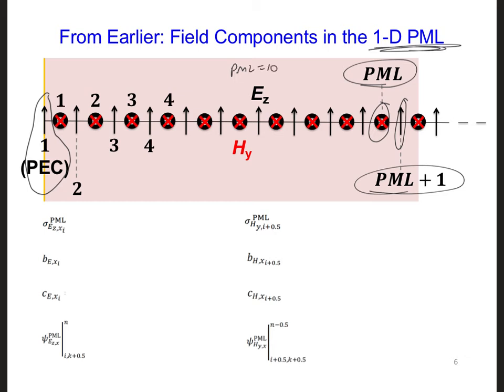Also to make things easier, go ahead and define the sigmas, BE and CE and BH and CH, and the psi values to have the same indices as we used earlier on the left side of the grid. The reason is we can then reuse more of the coding that we implemented earlier in the one-dimensional code.